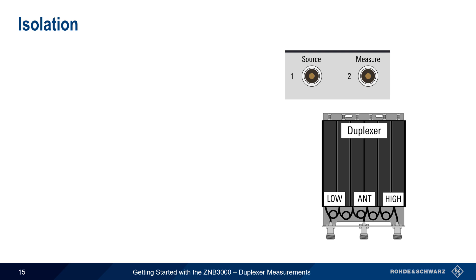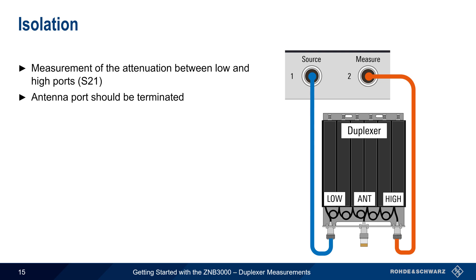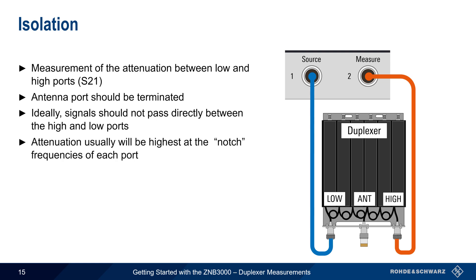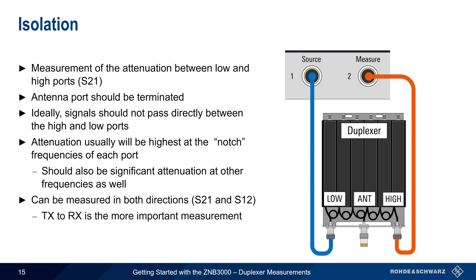The next measurement is isolation — the amount of attenuation between the low and high ports. Like port-to-antenna attenuation, this is also an S21 measurement, and the unused antenna port should be terminated. Ideally, no signals would pass directly between the high and low ports — that is, there would be infinite attenuation between them. In practice, port-to-port isolation will be highest at the notch frequencies of each port, but should also be significant at frequencies outside of the notches. Isolation can be measured in both directions, but transmit-to-receive is usually the more important measurement, since we're most concerned with keeping transmit power out of the receiver.